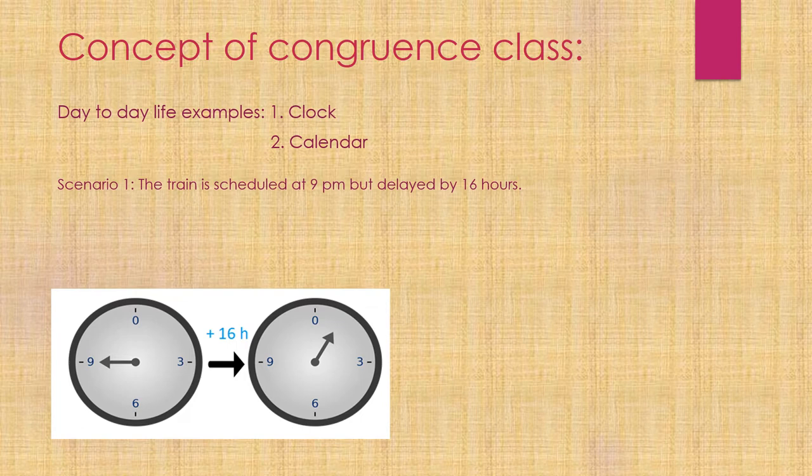How? Let's split 16 hours into two parts: 12 plus 4. Why 12? Because we can see only 12 hours on the clock dial. Adding 12 hours to 9pm gives 9am. To this 9am, we add the remaining 4 hours to get 1pm. So our train will reach the station at 1pm the next day.